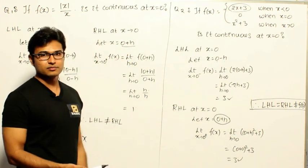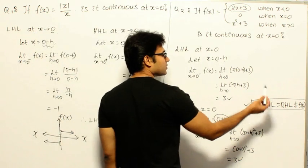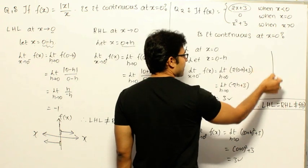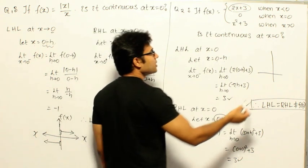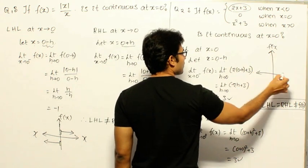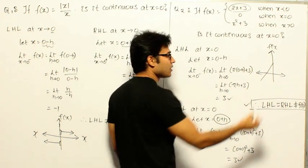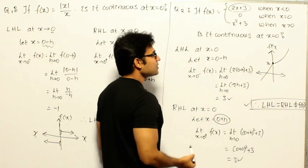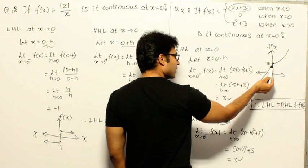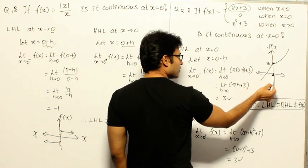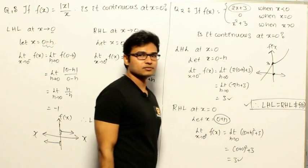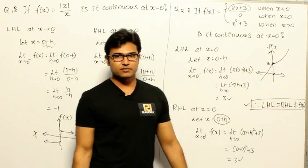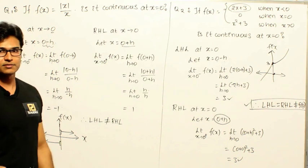However, both limits equal 3 but f(0) = 0, which is not equal to 3. According to the definition of continuity, the function is not continuous at x = 0. Graphically, 2x + 3 is a line and x² + 3 is a curve, and both approach a value of 3 near x = 0. But at x = 0 the value drops to 0, then jumps back to 3 — creating a discontinuity. Therefore, this function is not continuous at x = 0.